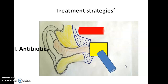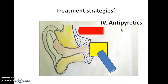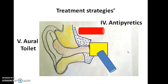Coming to the treatment strategies: antibiotics — usually penicillins and cephalosporin groups — are given to clear the infection. The blocked Eustachian tube has to be relieved; edema around it should be cleared by nasal decongestants so that natural drainage will happen through the nasopharynx. Analgesics are given to relieve pain, antipyretics are given for high-grade fever, and aural toileting is done to clean any discharge on a day-to-day basis. The external auditory canal should be kept clean to prevent external ear infection as well.